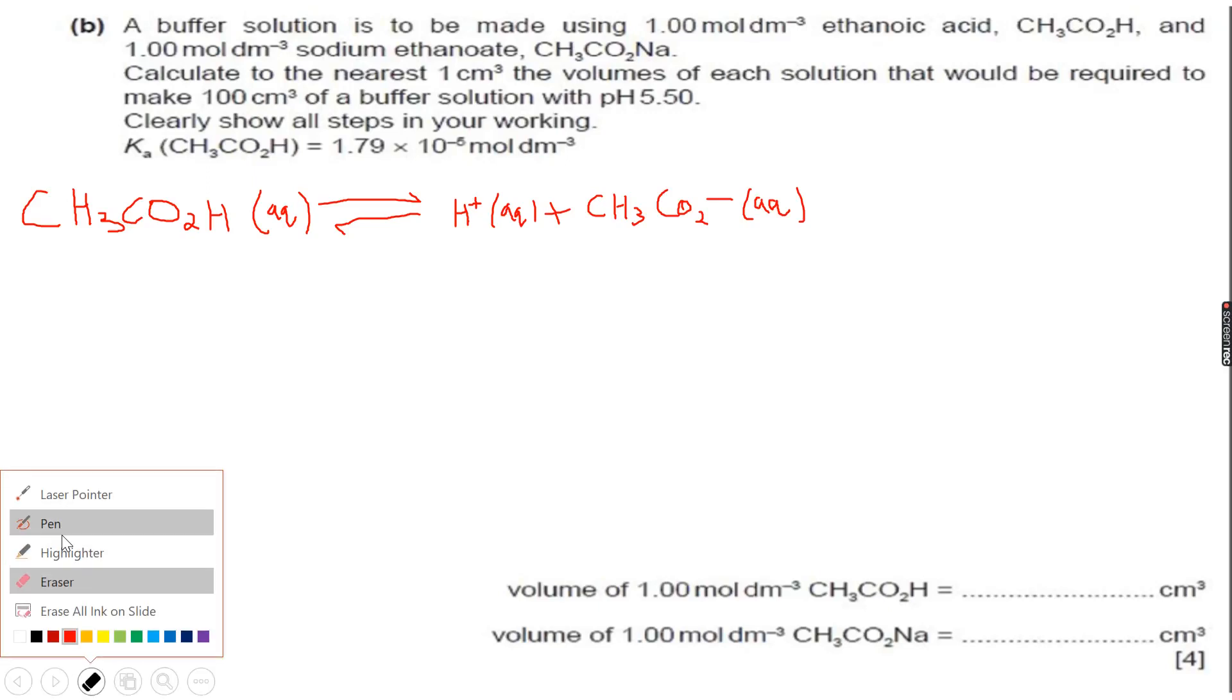Now we are given that the concentration of ethanoic acid is 1 mole per dm³, so I'll write 1 over here. I'm not looking at the concentrations of these because from this 1 mole per dm³, a very very small amount, an infinitesimal amount of CH₃CO₂H will dissociate to form H⁺ and CH₃CO₂⁻. So I'm not looking at their concentrations because I don't know what they will be.